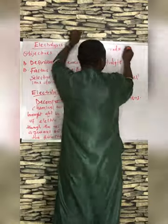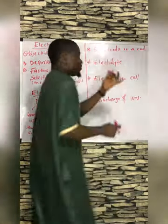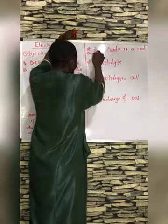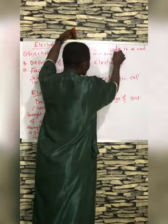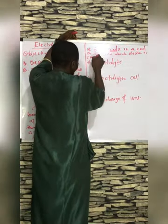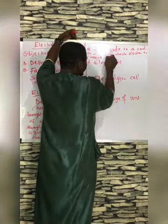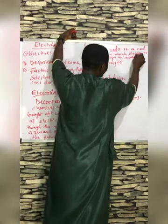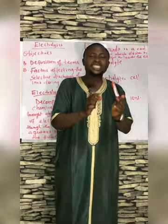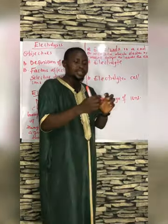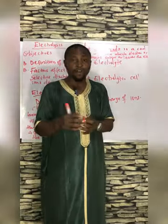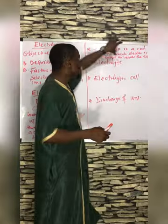Whenever you want to define what electrode is, you should remember this rod. It's a rod or wire through which electrons or current enters or leaves the electrolytes. There are some chemical substances within the electrolytic cell which are called electrolytes. The rod that conducts or allows the electrons to enter or leave the electrolyte is termed electrode.